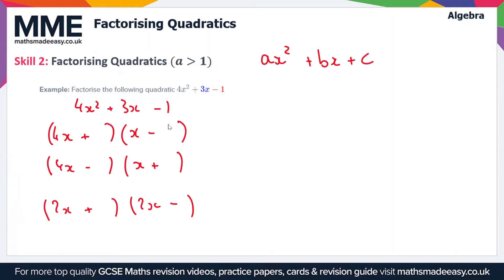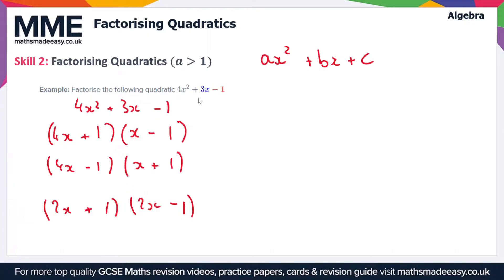The reason we've got a plus and a minus here is because our numbers have to multiply to give minus 1, so it has to be a minus number — therefore it has to be a positive and a negative number inside the brackets. They also have to add together to give plus 3. The only numbers which will multiply to give minus 1 are 1 and 1, so we can put 1 and 1 in all of these brackets.